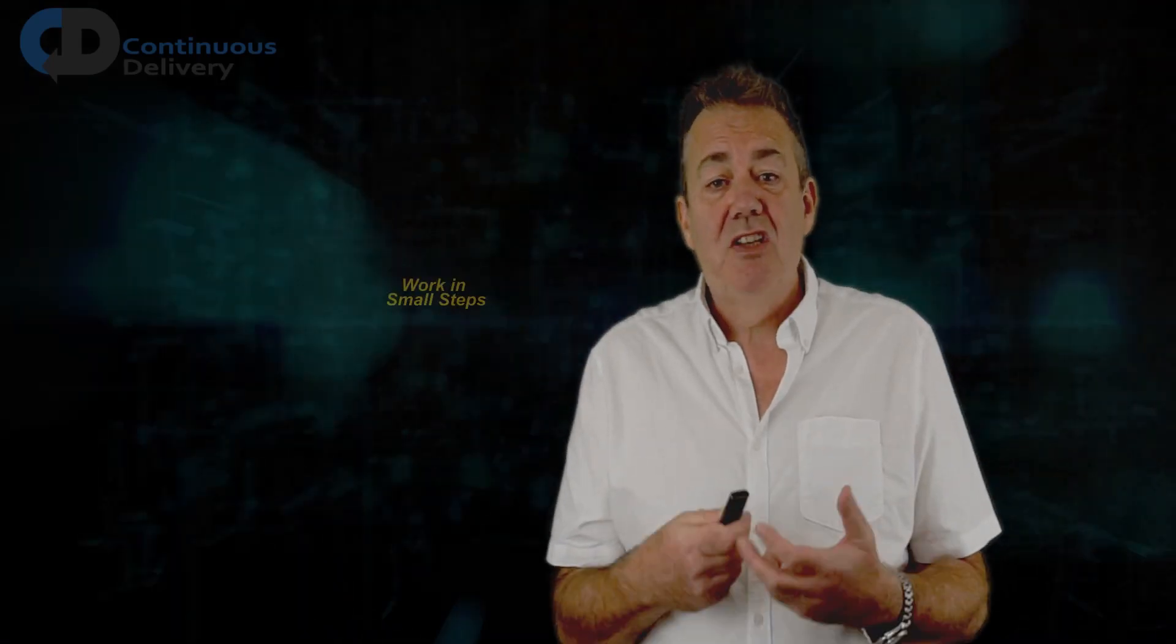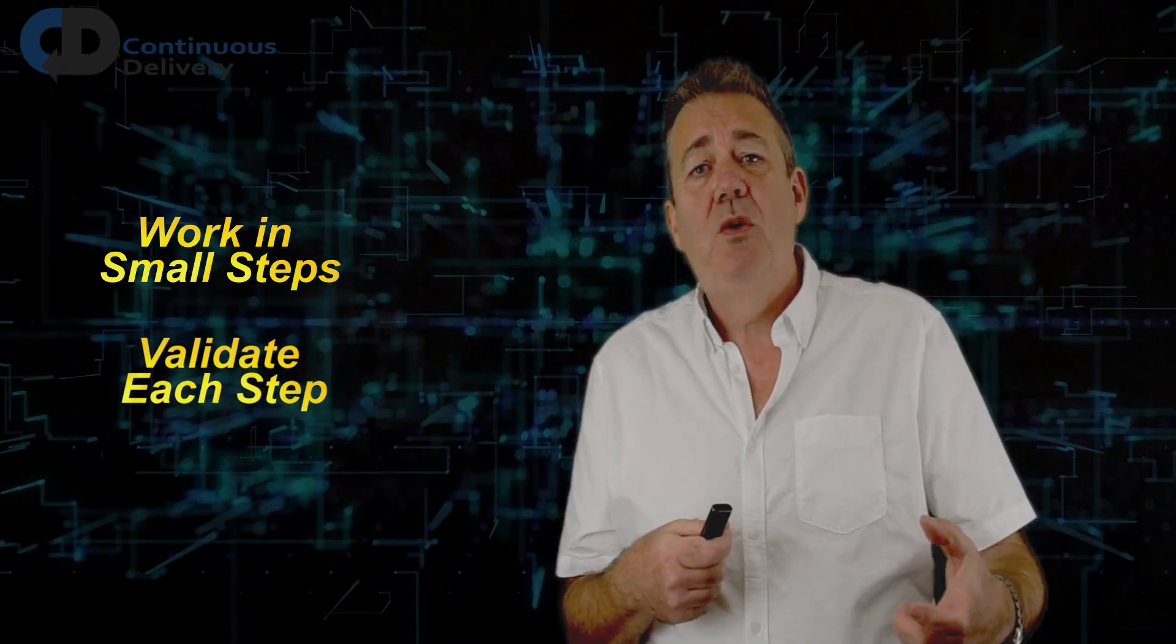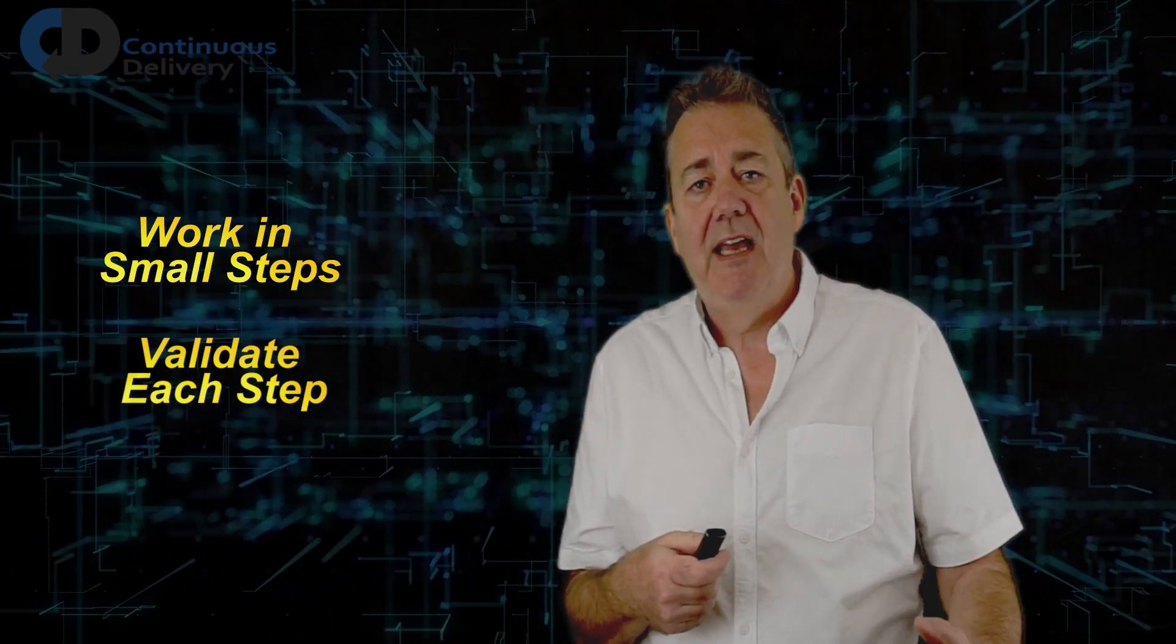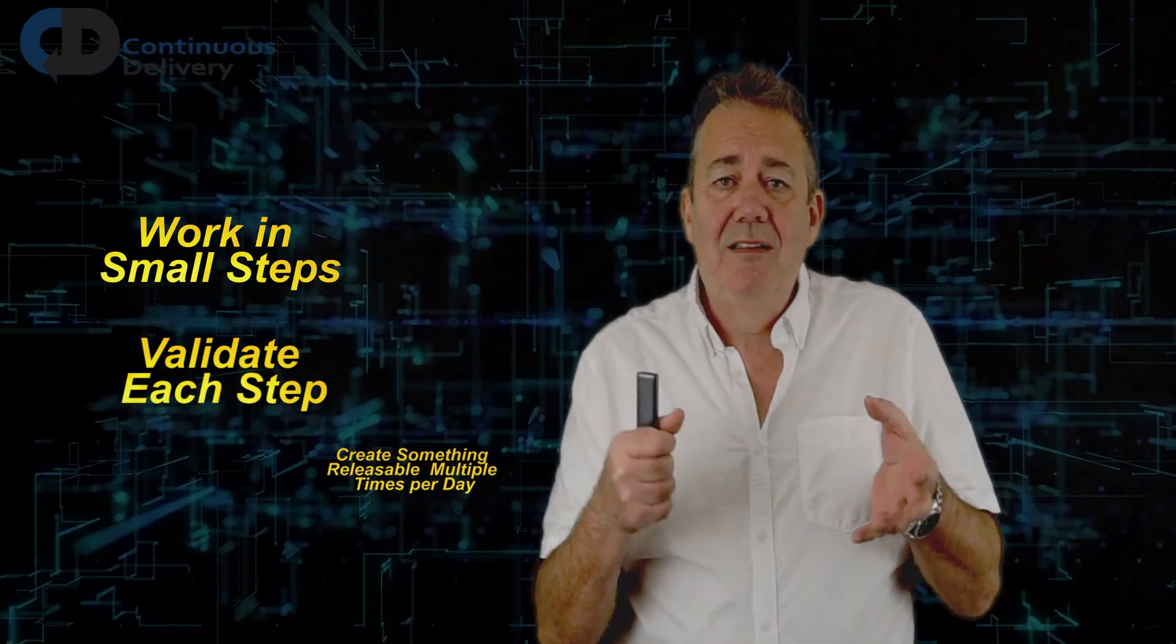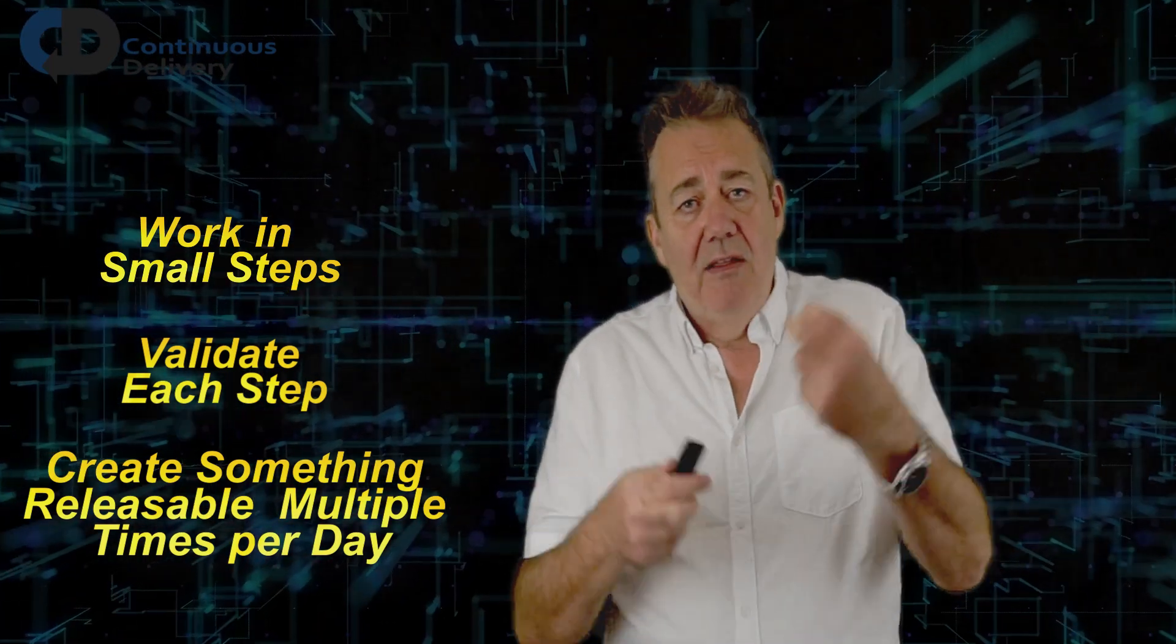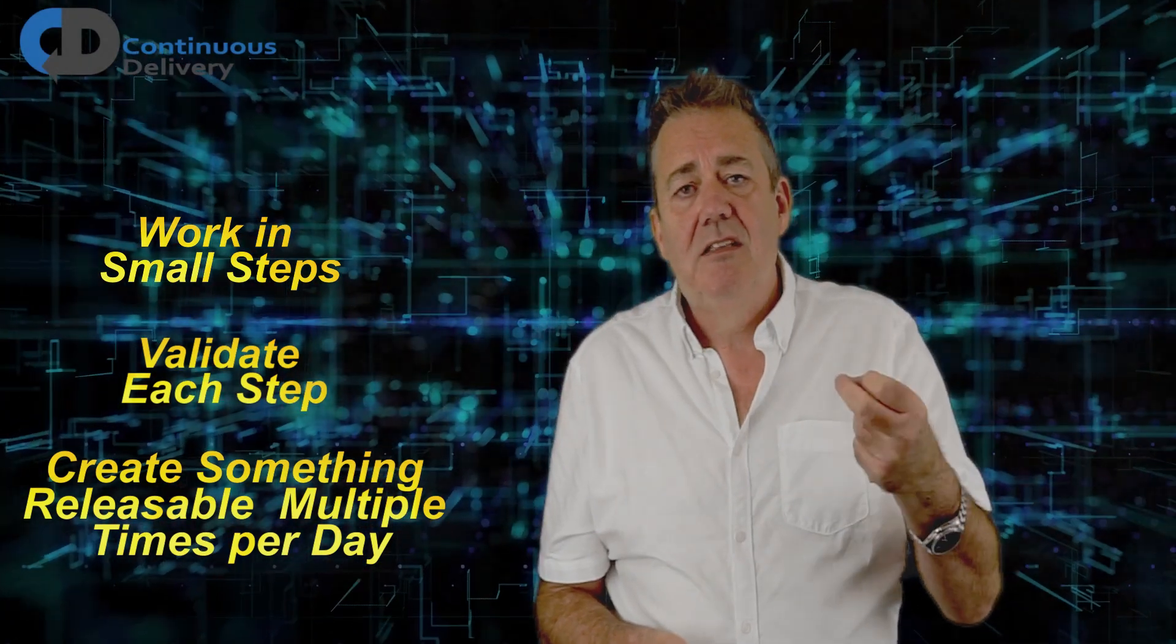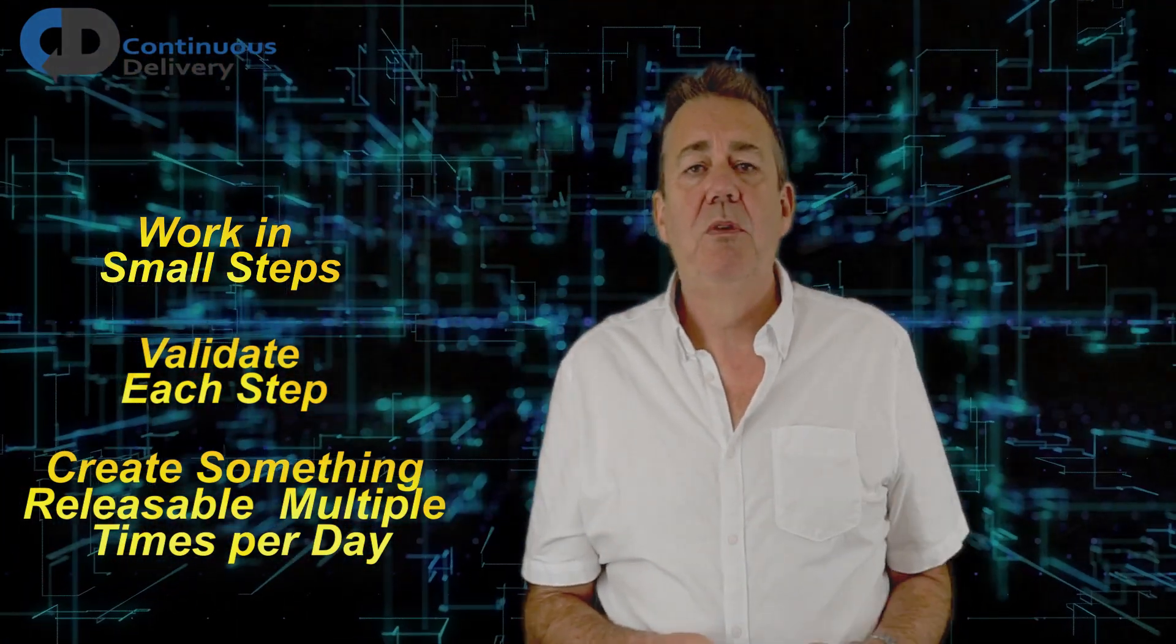In summary, how do we make software that we can be confident in, has less risk of breaking what went before, and maximizes our opportunities to learn? We work in a series of small, fast steps. We validate every one of these small changes frequently, multiple times per day, and optimize the whole so that we can get a definitive signal from the point of commit to the point of release that this thing is safe to go. We want to be able to answer the question, is this thing releasable? And we want to get an answer to that question multiple times per day.